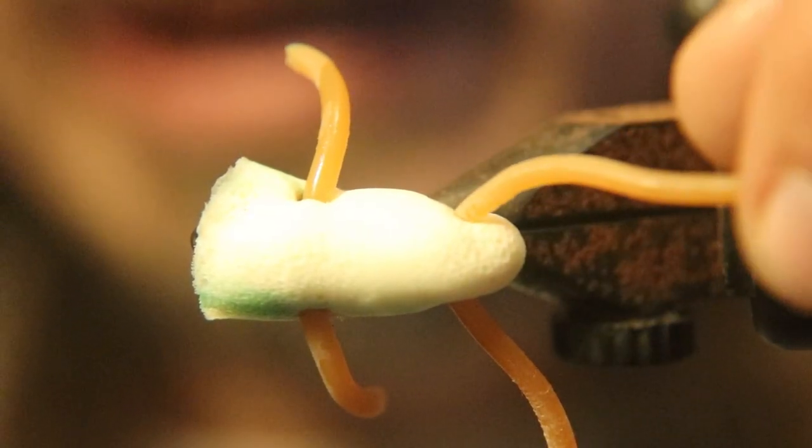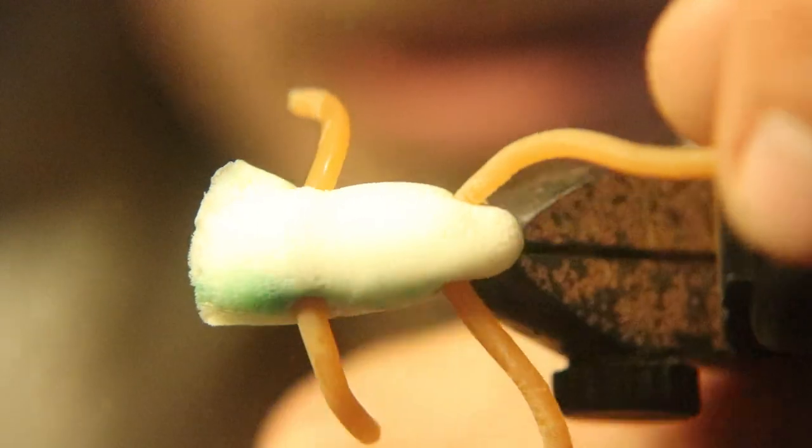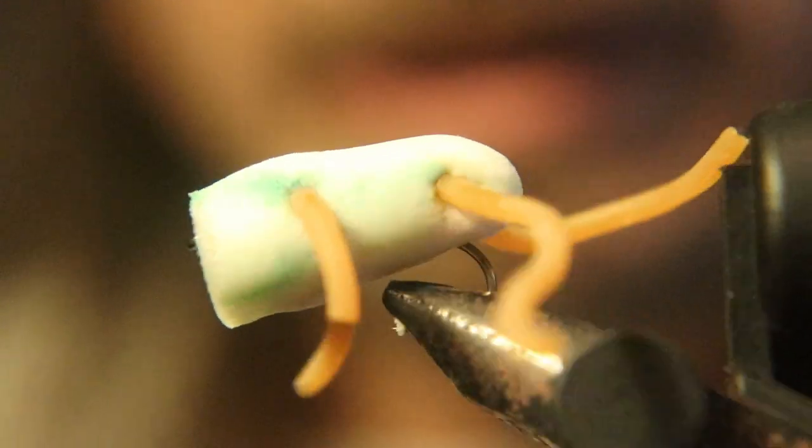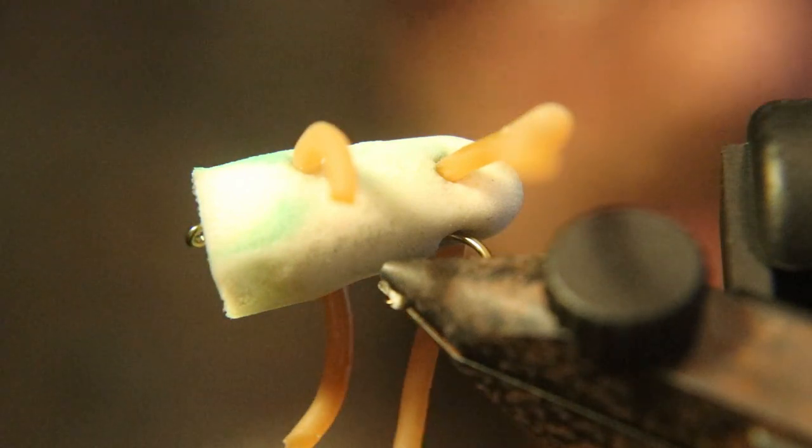Anybody look at this fly as it's in the vise here and tell me why a fish would hit this? Any guesses?